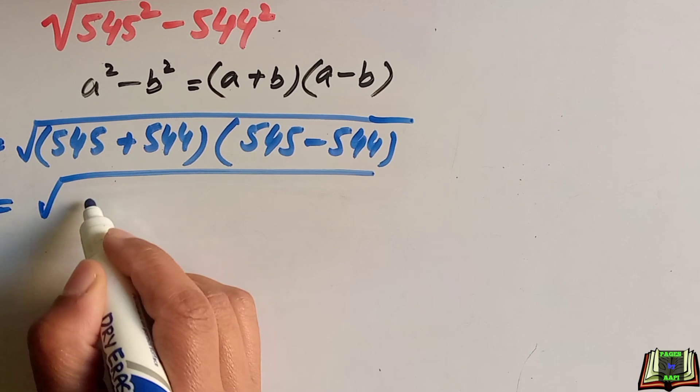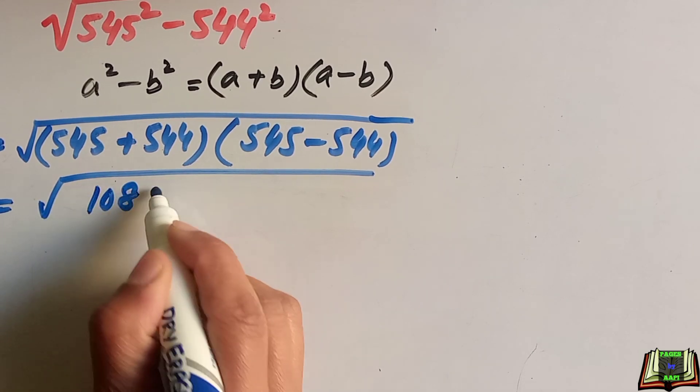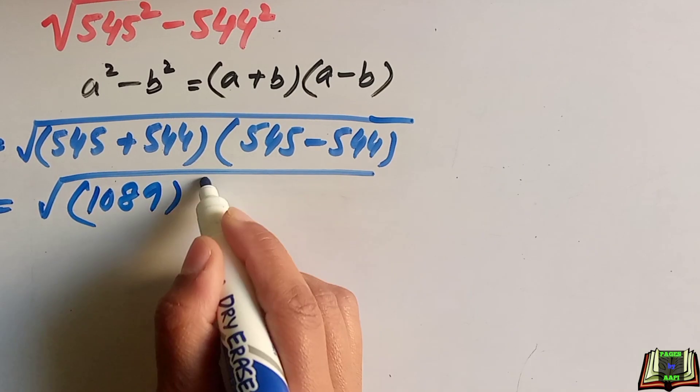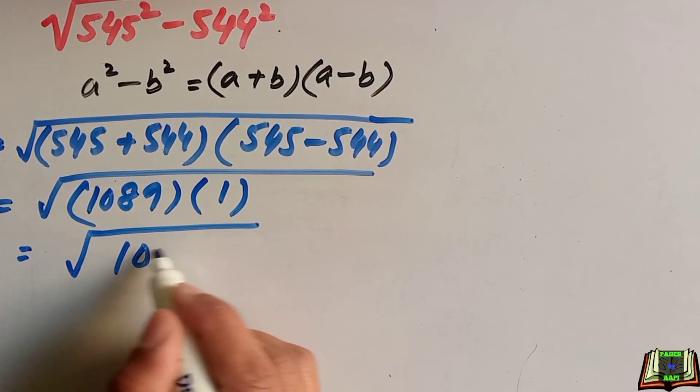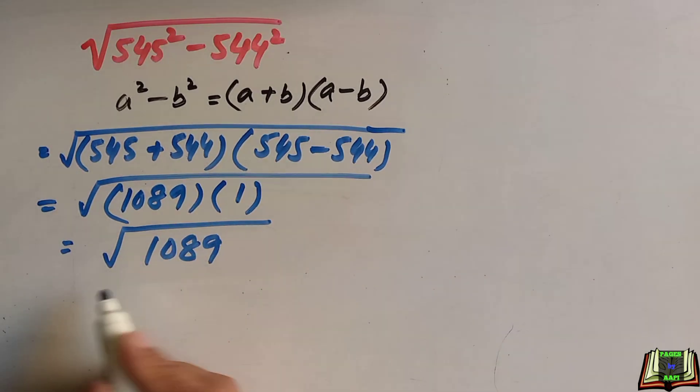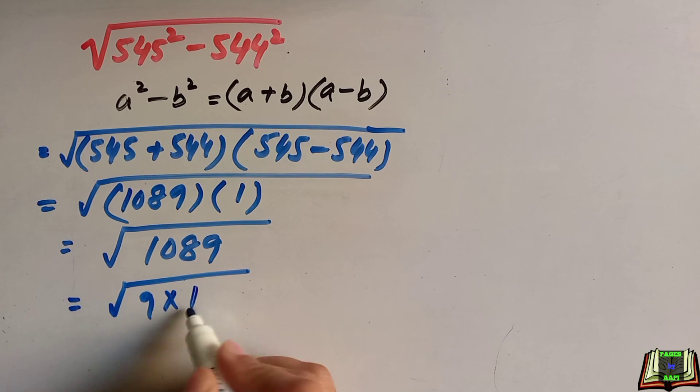Now simple calculation: 545 plus 544 is equal to 1089, and this is equal to 1. 1089 times 1 is 1089, and this is equal to 9 times 121.